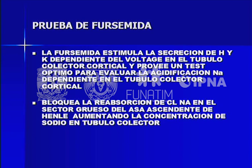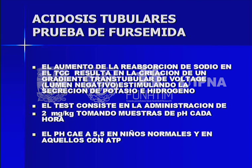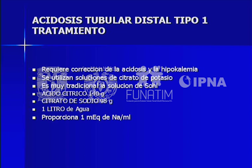La furosemida estimula la secreción de hidrógeno y potasio independiente del voltaje en el túbulo colector cortical y provee un test óptimo para valorar la acidificación dependiente del sodio. Bloquea la reabsorción de cloruro de sodio en el sector grueso del asa de Henle, aumenta la concentración de sodio en el túbulo colector y crea un gradiente trasbtubular de voltaje que estimula la secreción de potasio e hidrógeno. Se administran 2 mg/kg intramuscular tomando muestras de pH cada hora. El pH cae a 5.5 en niños normales y con acidosis tubular proximal, pero no en los con acidosis tubular distal.